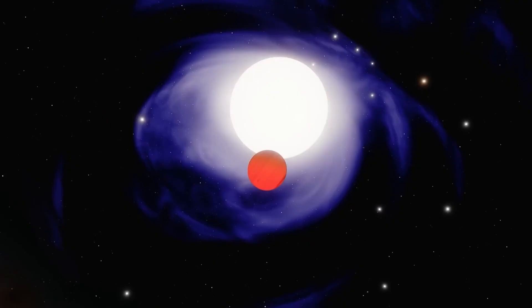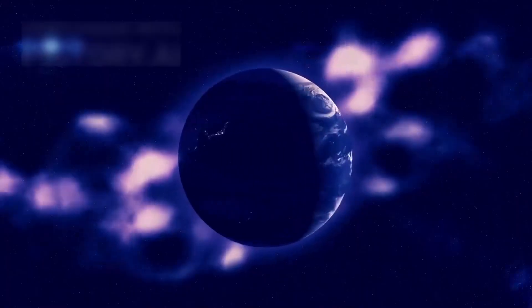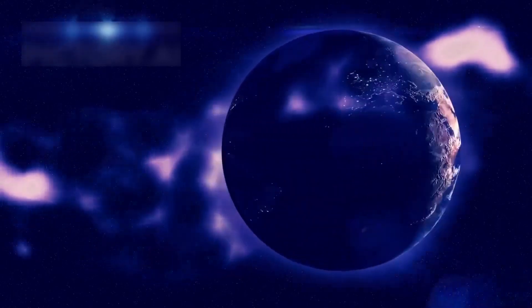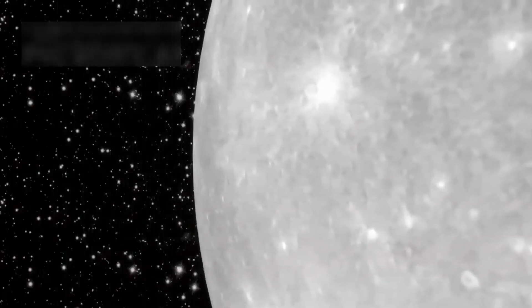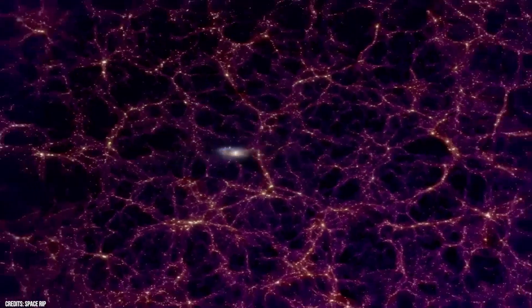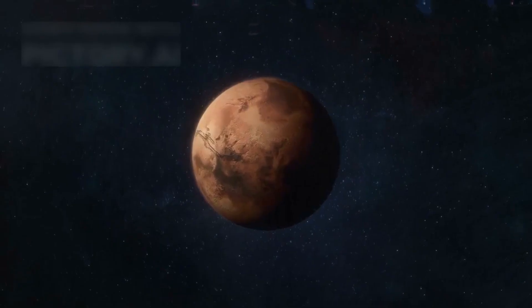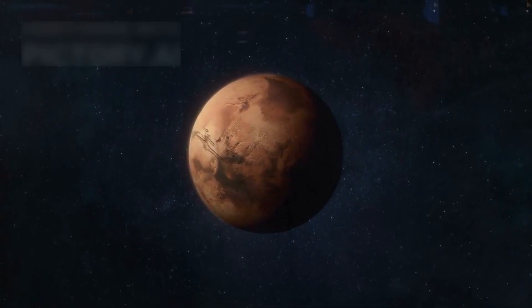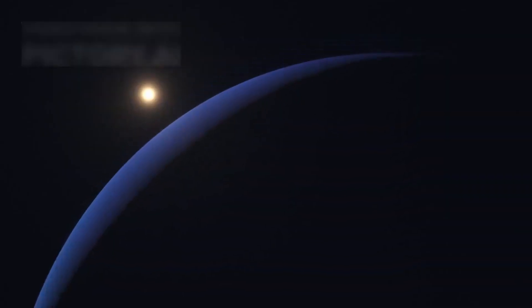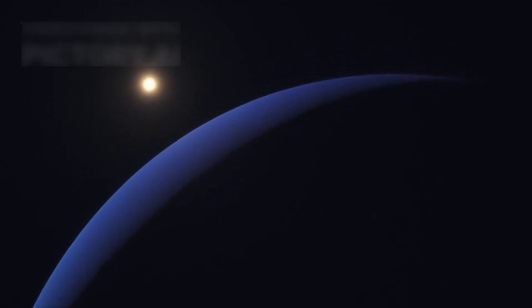Now, let us try to wrap our heads around the immense size of the entire universe. Scientists believe the universe stretches about 93 billion light-years across. But what exactly is a light-year? It is the distance light can travel in one year, equivalent to a whopping 63,000 astronomical units. When we consider that each light-year measures an incredible 9 trillion kilometers, or 6 trillion miles, we start to grasp just how vast the universe truly is.